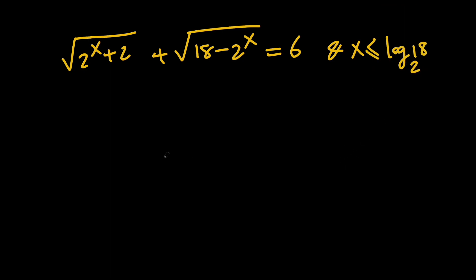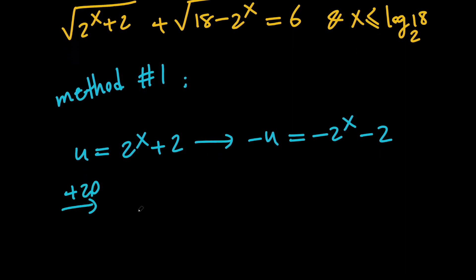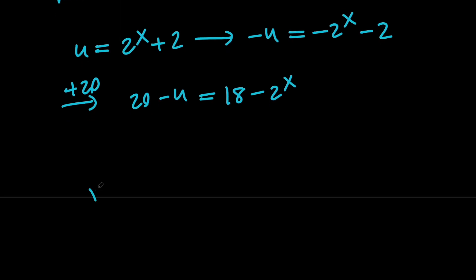Now let's start with Method 1. Let u equal 2 to the x plus 2. Negating both sides gives negative u equals negative 2 to the x minus 2. Adding 20 to both sides gives 20 minus u equals 18 minus 2 to the x. So replacing the radicands, our equation becomes: square root of u plus square root of (20 minus u) equals 6.